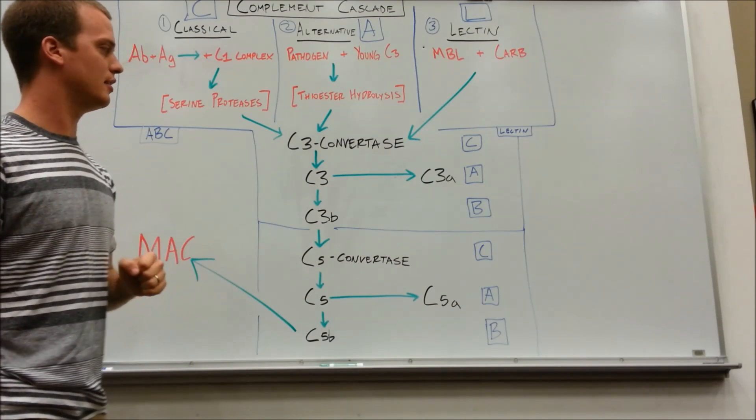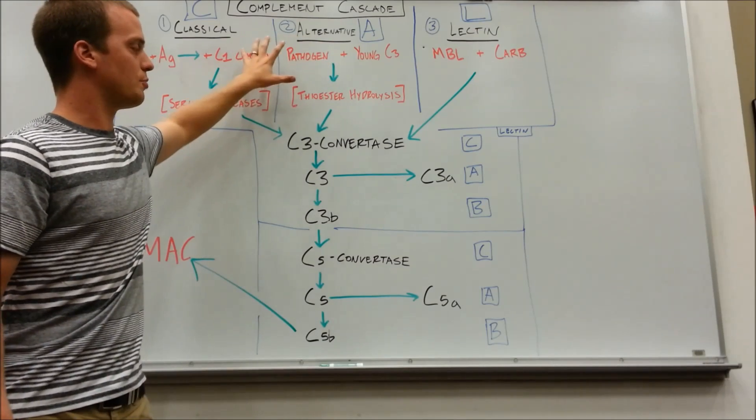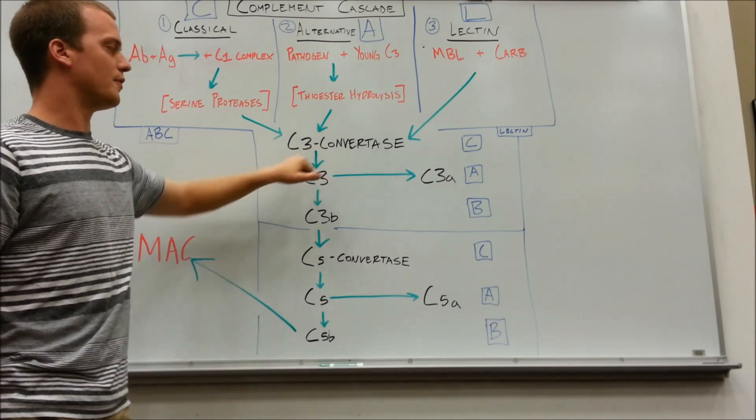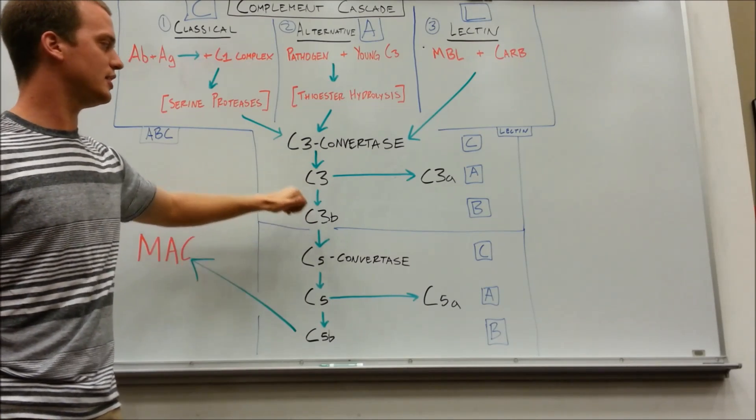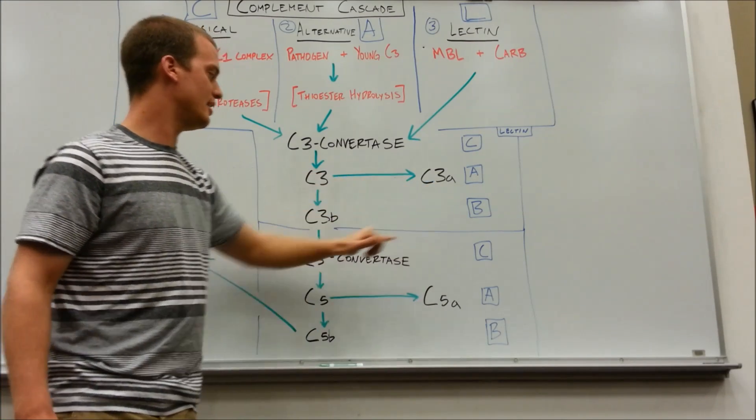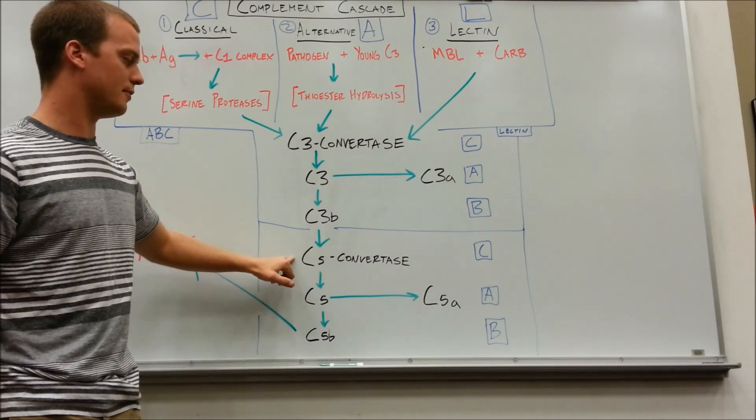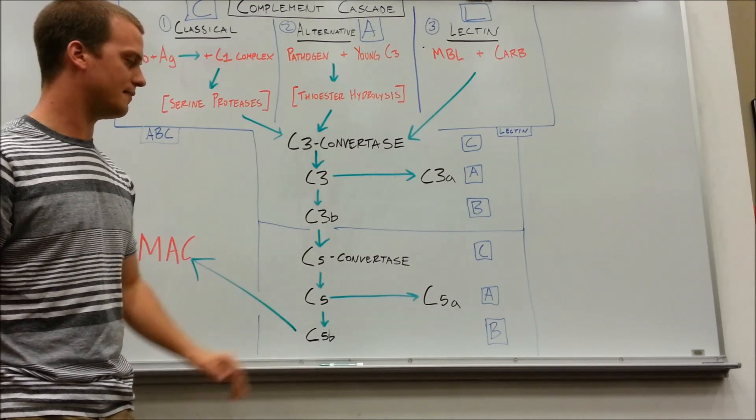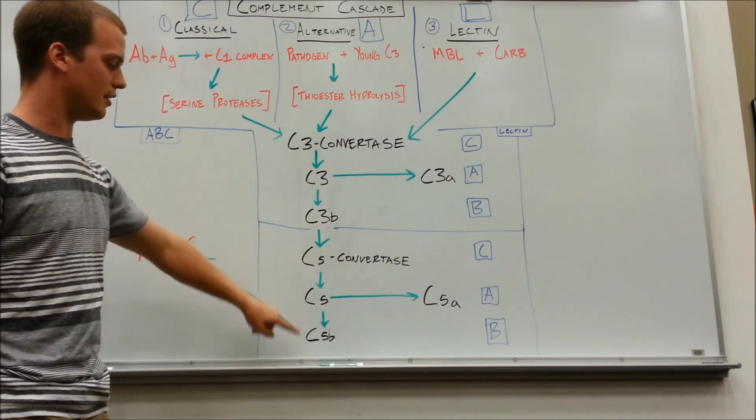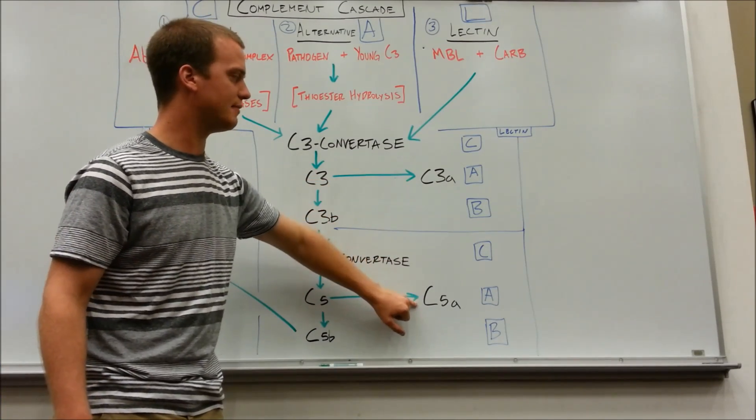I will walk you through this even though I think you guys can pick it up. C3 convertase, which is where all of our starter pathways end up, it converts, it attacks, it changes. C3, which is a protein, changes into C3A and C3B. Then C3B comes down here, does the same thing. C5 convertase changes C5. We're now dealing with C5B as one product and our other two products are C3A and C5A.